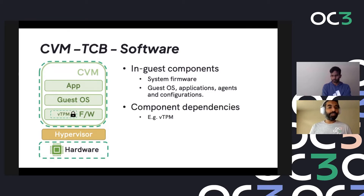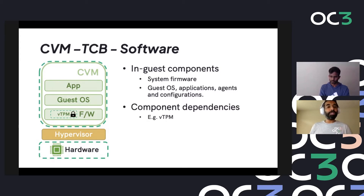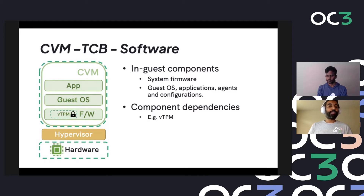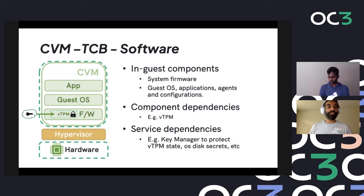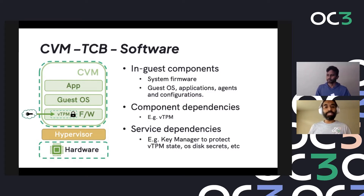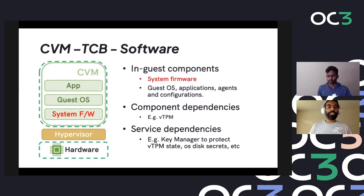System firmware choices can also get interesting when you think of component dependencies. If a system firmware is based on UEFI and offers a feature such as secure boot, it might pull in component dependencies like a virtual TPM. This virtual TPM now needs to be isolated and protected - in fact isolated from both the hosting environment as well as the core CVM - and must be attested. Additional service dependencies might come in too: if a virtual TPM tries to maintain persistent state, it might rely on keys managed by a key manager, so your TCB potentially increases based on the choice of system firmware.